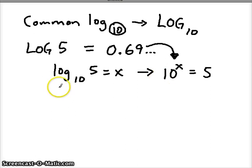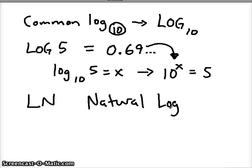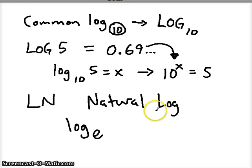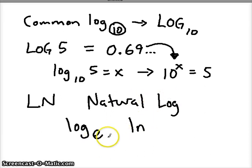Now let's look at a different type of special log. Another button you might see on your calculator is 'LN', which refers to the natural log. The natural log is a log with a base of E. Any time you see LN — whether capital or lowercase — you need to be thinking it's a natural log with a base of E.